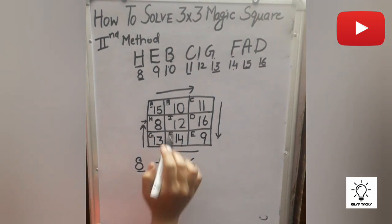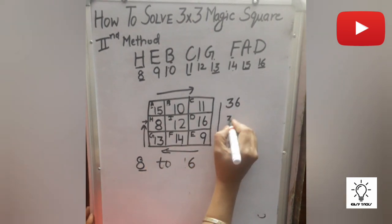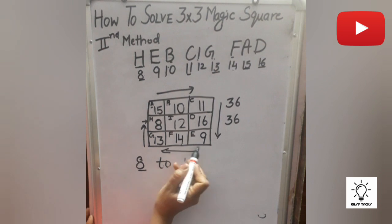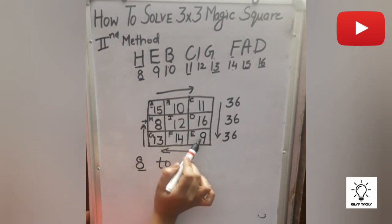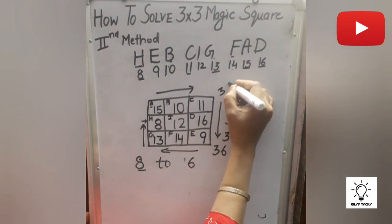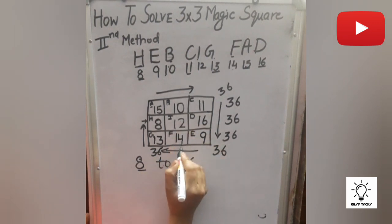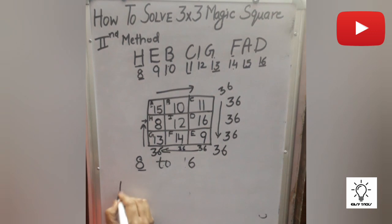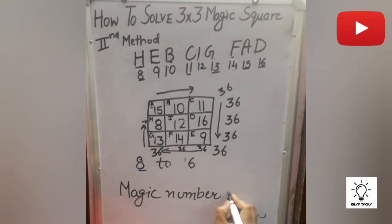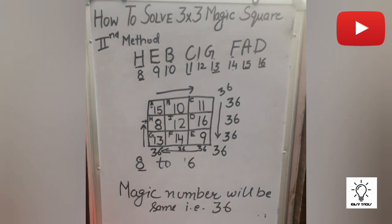When we add these numbers: 15+10+11 = 36. Then 12+8+16 = 36. And 13+14+9 = 36. Diagonally, 15+12+9 = 36. Whether we add vertically, horizontally, or diagonally, the number is always the same. The magic number is 36.